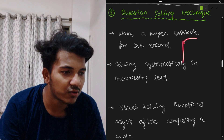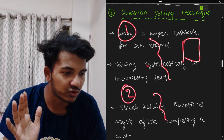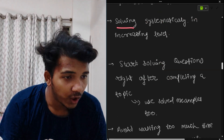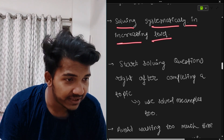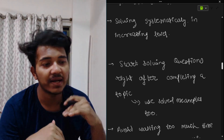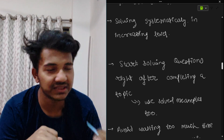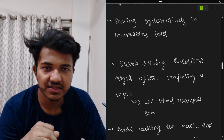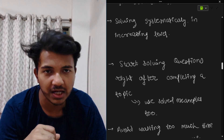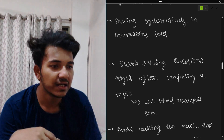Write question number one and solve it, then question number two and solve it. You need to maintain this notebook properly. Solve systematically in increasing level — start from level zero, then level one, then level two. Start from solved examples, then level one, level two, and proceed. Every book has questions divided level-wise.